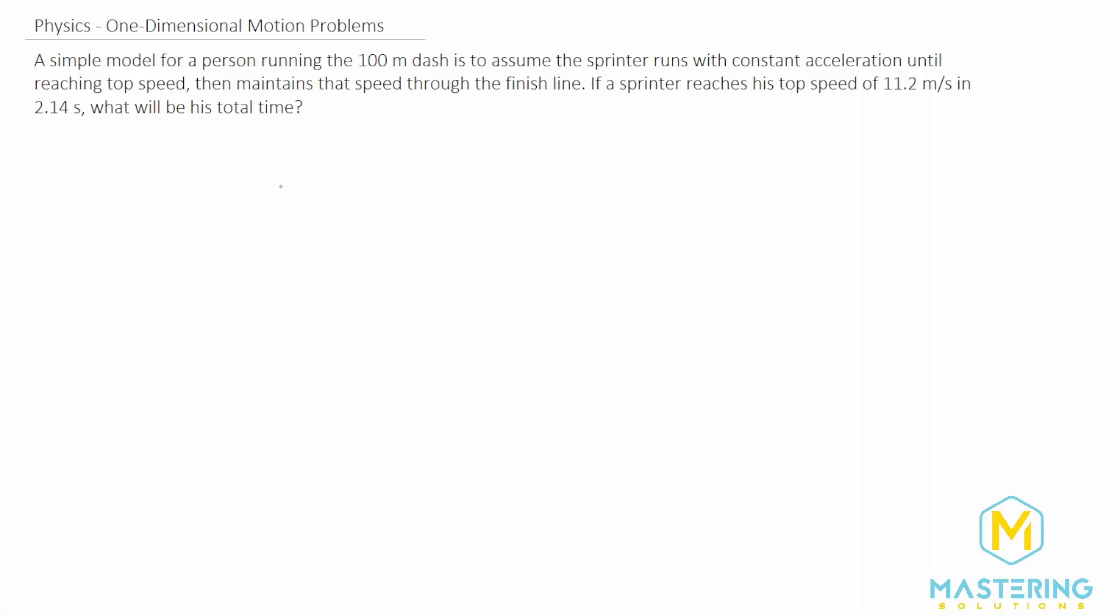Welcome to Mastering Solutions. In this problem, we're modeling a person running a 100 meter dash. They run with constant acceleration until they reach top speed, then maintain that speed through the finish line.